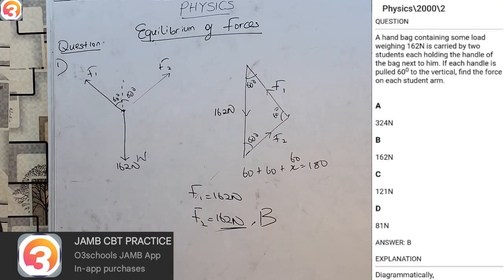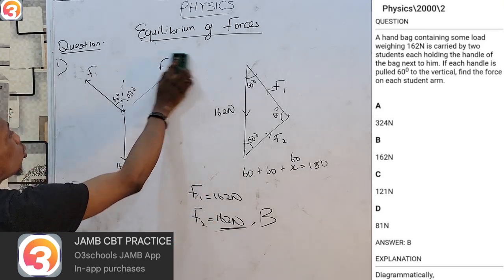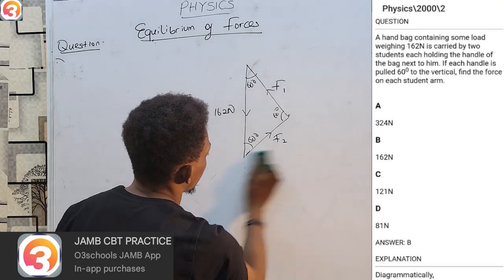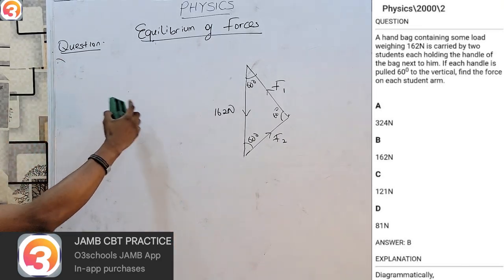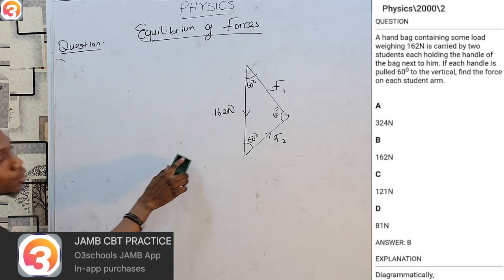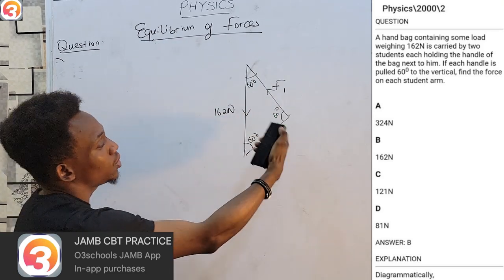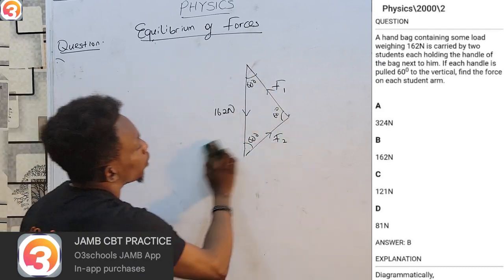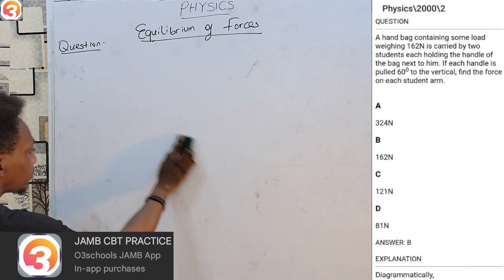The process is: first draw the free body diagram based on the question description, then create the triangle of vectors with all vectors flowing into each other, then solve the triangle. Understanding your mathematics is essential — once you identify the structure in physics, what you are basically doing is solving maths.